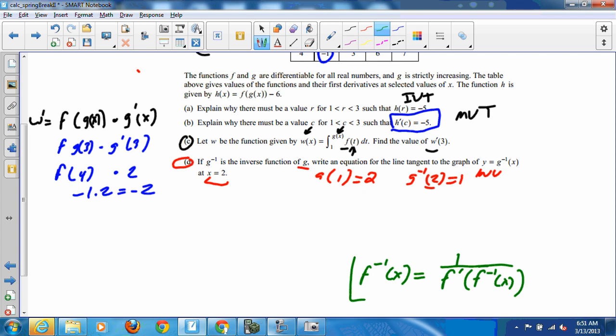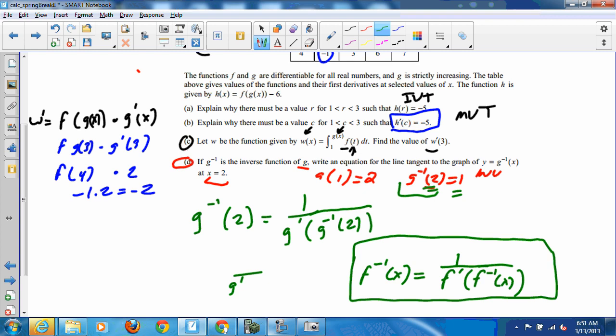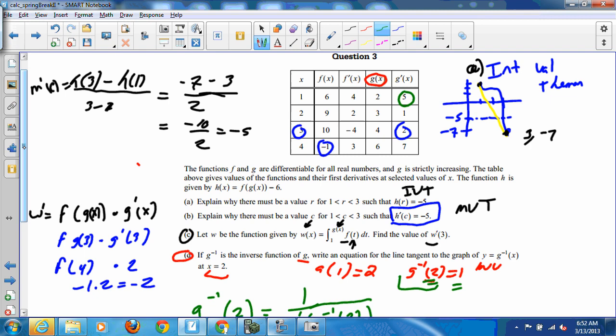Alright. Well, I'm going to erase this part. And we're going to keep this here because we're going to need this. So we're basically looking for the derivative at 2. So it's 1 over the derivative of the function, and let's switch to g, since that's what the problem is asking us for. Okay? So the inverse at 2 is equal to 1, so we have g prime at 1. And g prime at 1 is equal to 5, just right from the table. So what is our slope? Slope is equal to 1 fifth.